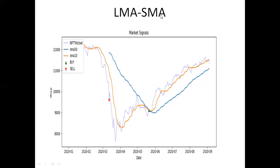This is the LMA and SMA crossover — long moving average and short moving average — which I've discussed many times. These trade signals are generated through my automatic trading system. The crossover I'm looking at right now is SMA 50 and SMA 10 — simple moving average with lookback periods of 50 and 10. The last signal that came was a buy signal when Nifty was at 9,000, and thereafter over the last three months we've seen Nifty rallying up to 11,800 and 11,750, so there can be a slight correction from here.